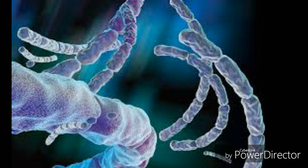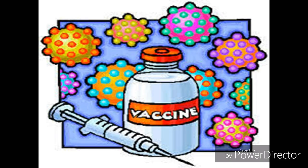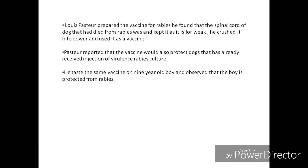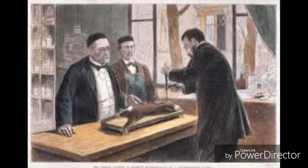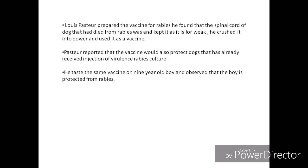Louis Pasteur prepared the vaccine for rabies. He found that the spinal cord of a dog that had died from rabies was used and kept as it is for a week. He crushed it into a powder and used it as a vaccine. It was reported that the vaccine would also protect a dog that had already received an injection of virulent rabies culture. The same vaccination was used on a 9-year-old boy, and it was observed that the boy was protected from rabies.